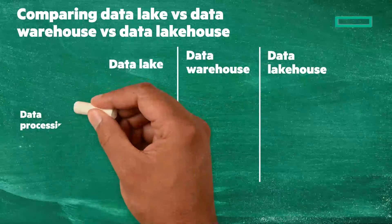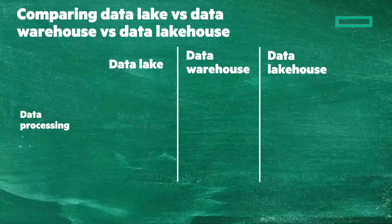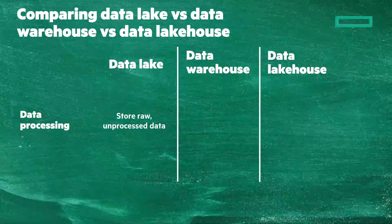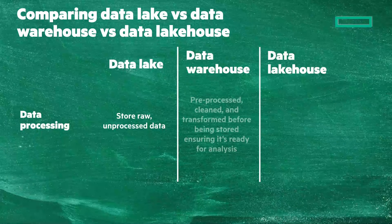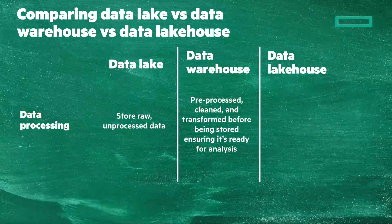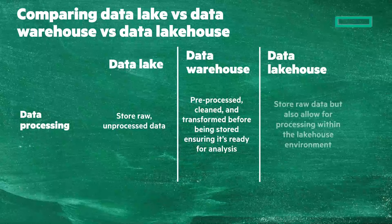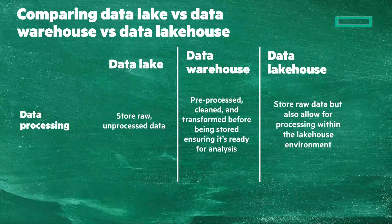Next, data processing. Data lakes store raw, unprocessed data. Data warehouses store data that is pre-processed, cleaned, and transformed before being stored, ensuring it's ready for analysis. Data lake houses can store raw data, but also allow for processing within the lake house environment.